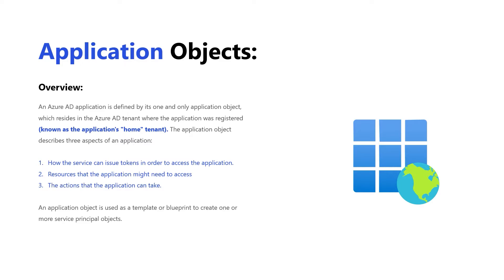So if you think about this at a high level, you have an application that might need to access other resources — we need to know that in advance. Or if somebody wants to access our application, we need to know what that process looks like to give them a token through some type of authentication protocol. Additionally, we define what things the application can do, because we might not want it to do everything. An application object is used as a template or blueprint to create one or more service principle objects, and we can customize the service principle further by limiting it to only one or two of those available actions.